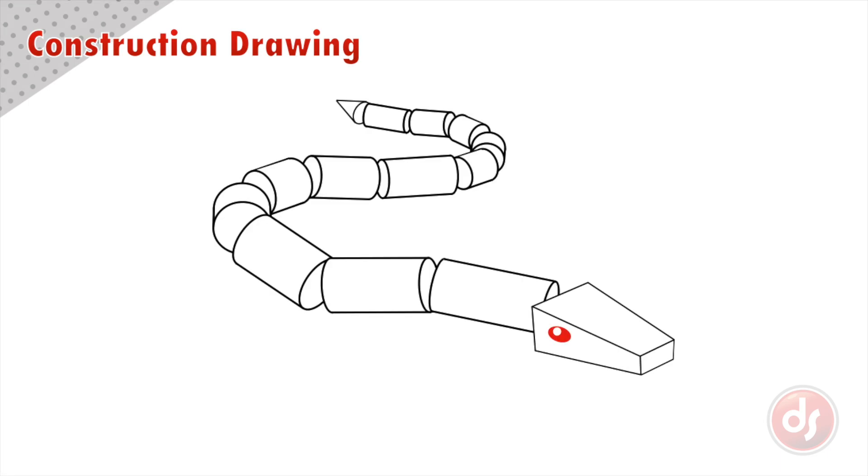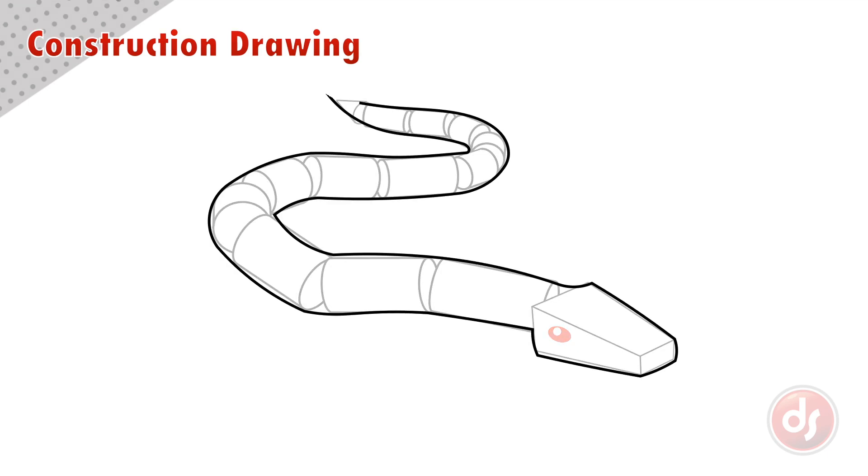Now that we have the construction done we can add a contour line to smooth out the snake's body. But something about it feels flat. If we look at these areas the cylinders underneath show us that the forms are overlapping but the contour line doesn't show this. By making the contour line literally overlap itself at these points gives the illusion of three dimensions. We call these overlapping forms and they are a really important way to create depth in our drawings.